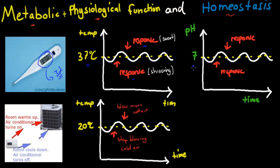With pH, the same idea applies. If we have it too high, there's a response to bring it back down. If we have it too low, there's a response to bring it back up. That makes sure we keep our blood pH between 7 and 8 — a very fine limit. That's the idea of homeostasis: everything is kept within a very fine limit.